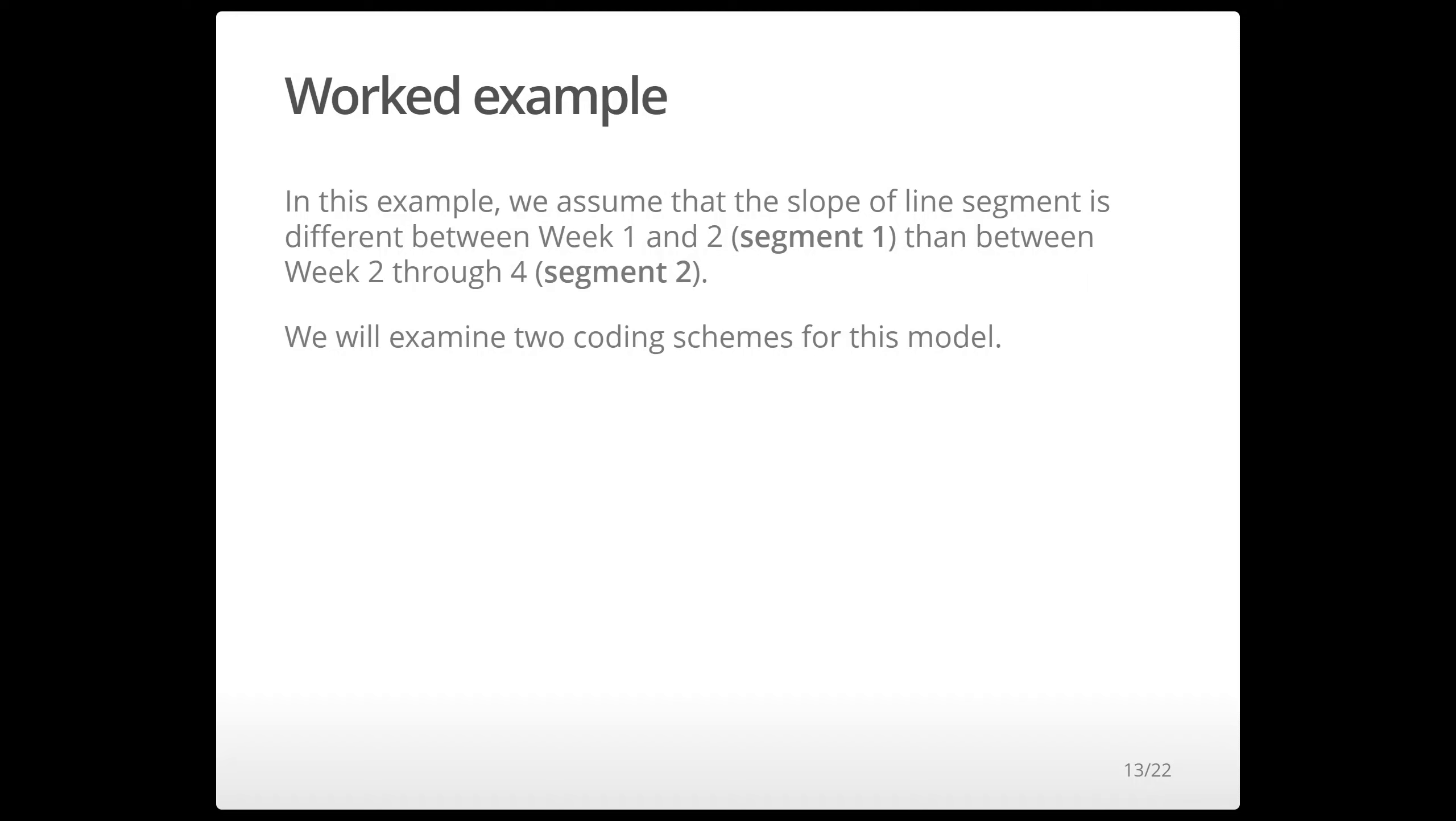So here we're looking at a situation where we're assuming that there are two different slopes for time and the slope changes after week two. So there's one slope for the period between week one and week two and then a different slope for the period between week two and four. And we're going to look at two different ways you can code a model that facilitate this interpretation.